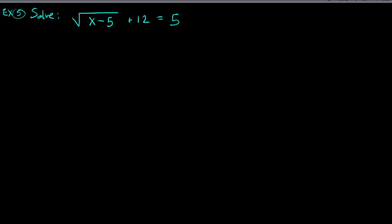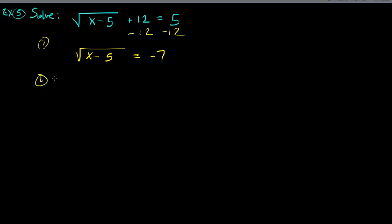Next problem: solve the square root of (x minus 5) plus 12 equals 5. Step one: isolate the square root — subtract 12 from both sides. That gives the square root of (x minus 5) equals 5 minus 12, which is negative 7.